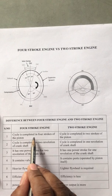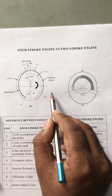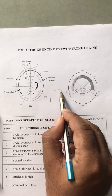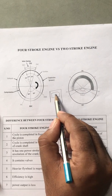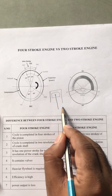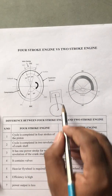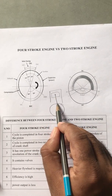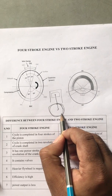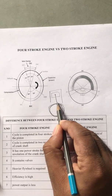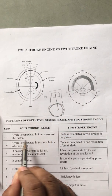In a 4-stroke engine, the cycle is completed in 4 strokes of the piston. The basic cycle consists of suction, compression, expansion, and exhaust — cycle is completed in 4 strokes of the piston.